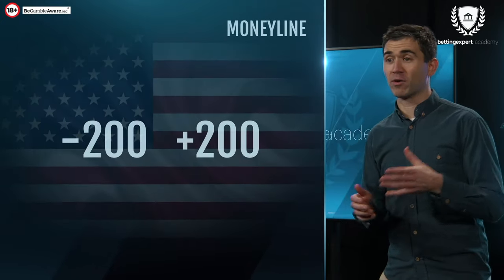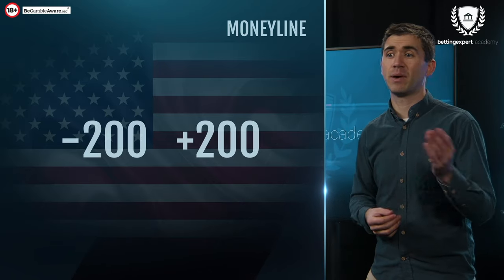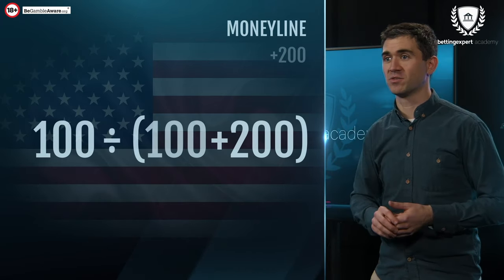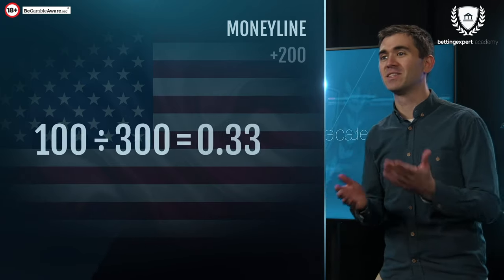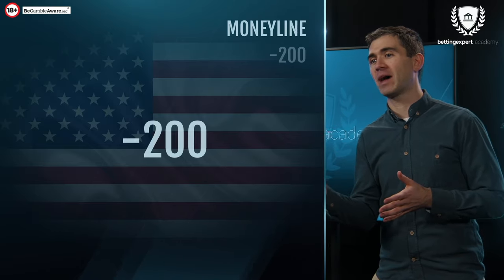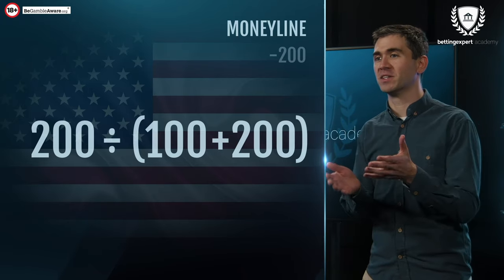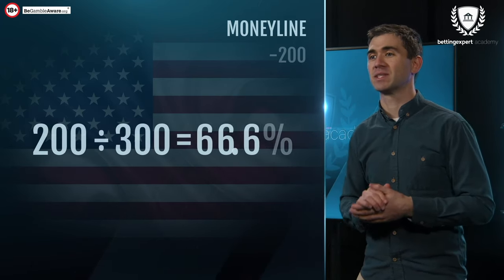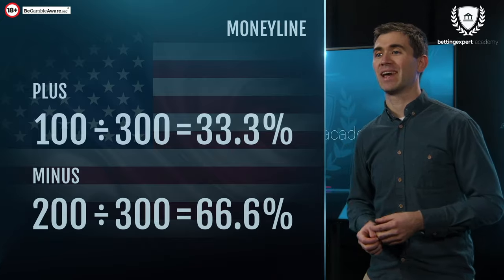For American odds there are two possible variations — plus and minus — and it takes two different formulas to calculate the implied probability depending on which version the odds are. For plus American odds, you take 100 and divide it by the odds plus 100. For our plus 200 example, it's 100 divided by 300, which gives 0.33 or a 33% implied probability. For minus American odds, you take that minus number, convert it to a positive, and divide it by itself plus 100. So for minus 200, we take 200 and divide it by 300, giving an implied probability of 66%. Minus American odds indicate a favorite, while plus American odds indicate an underdog.